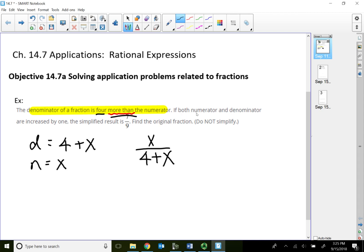Then the problem says, if both numerator and denominator is increased by one, so the original numerator over the denominator, if I plus one on the numerator and the denominator, the simplified result is seven over nine. So that means it's going to equal to seven over nine.